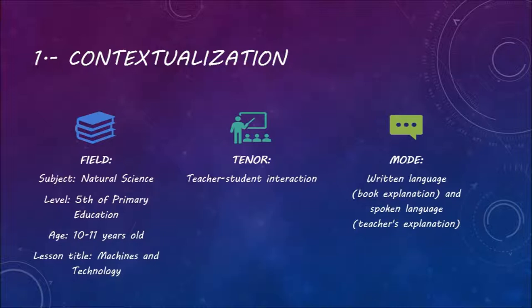We have divided into three categories. Firstly, the field: the subject is natural science, the level is fifth of primary education, which means that the students are 10 or 11 years old. The lesson title is Machines and Technology.